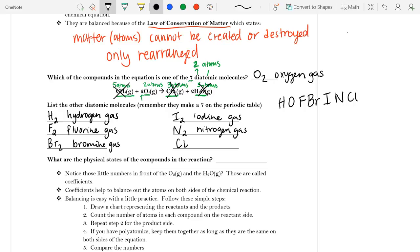And Cl, with a lower case l, will be chlorine gas. Okay, so it's very, very important that you memorize these seven diatomic elements. They'll be showing up over and over again throughout the year.